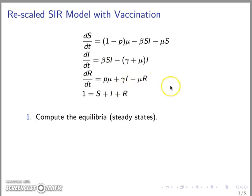This model is the SIR model with vaccination. The notation has been used in such a way that these state variables denote proportions, right? So S plus I plus R add up to 1.